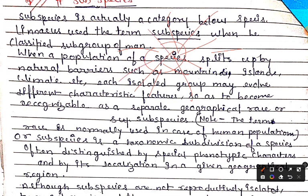So we call this sub-species, and this term was given as a Linnaean term. What is race? This term is used in human populations.